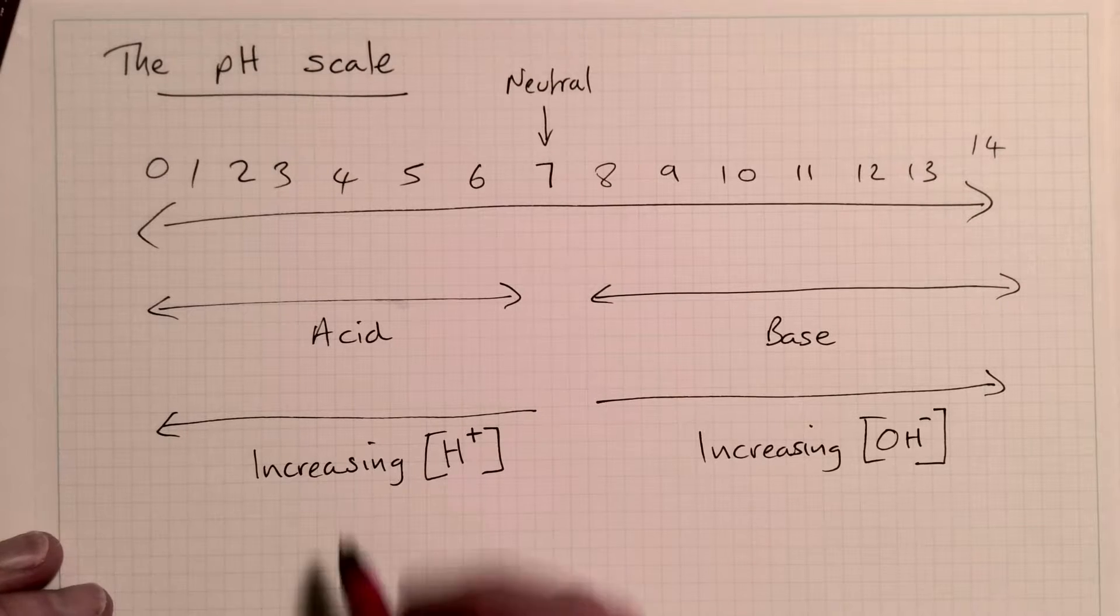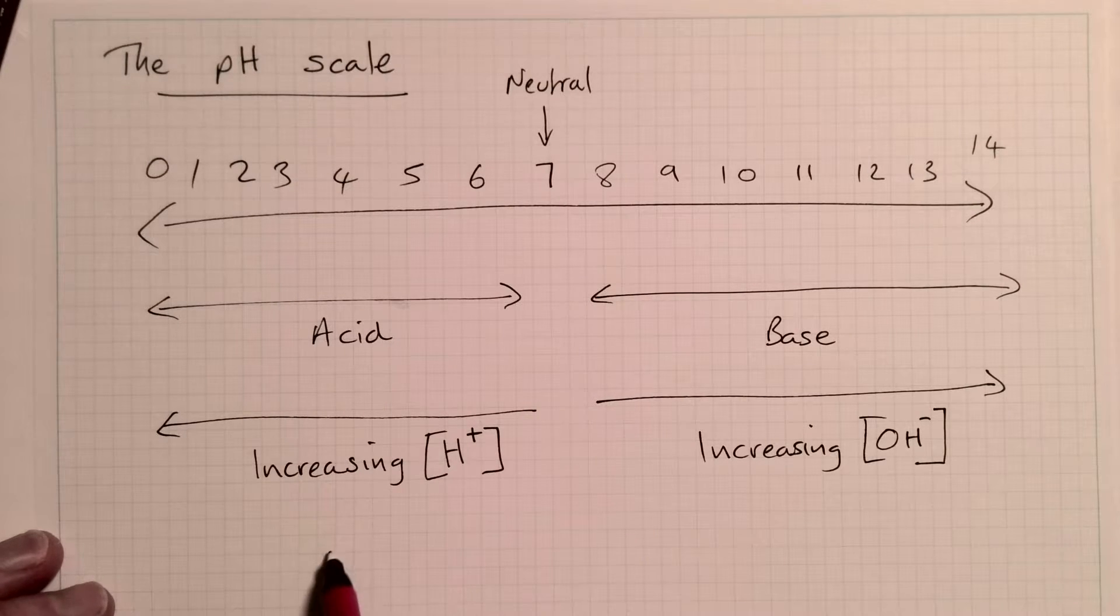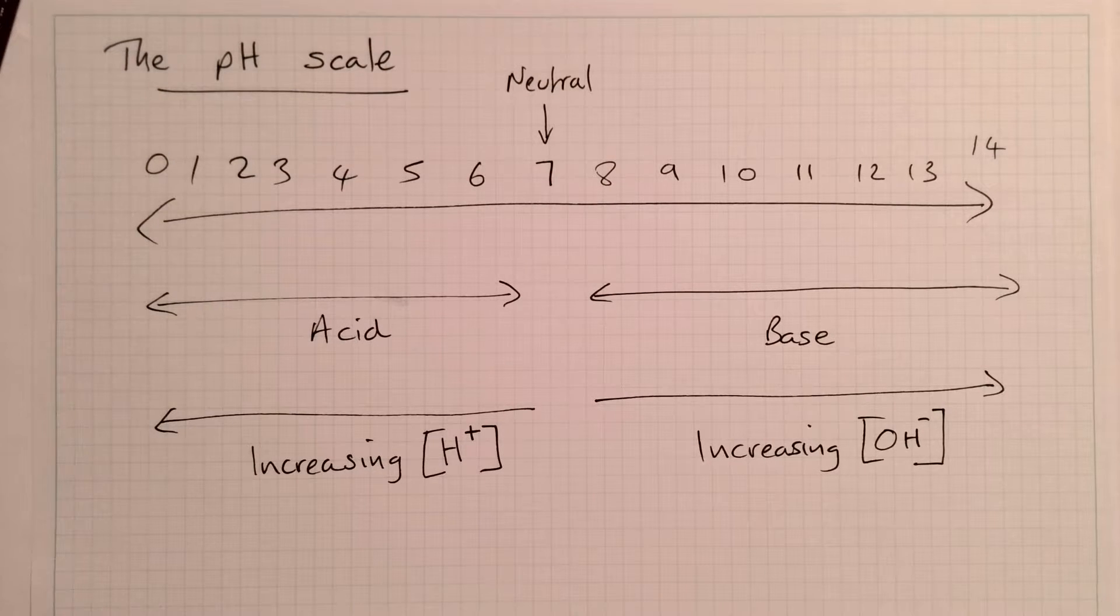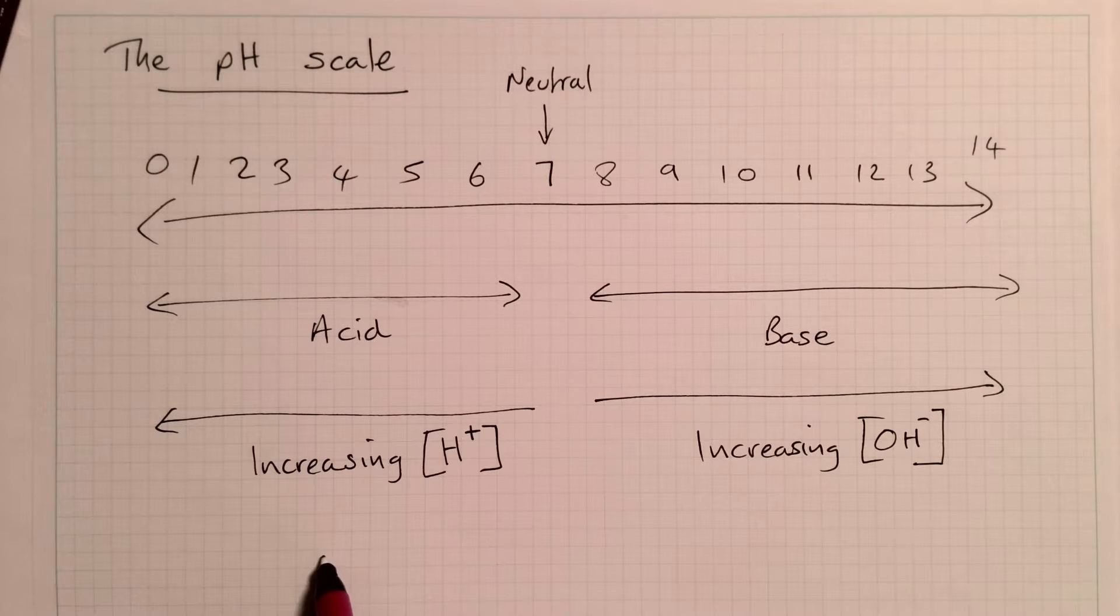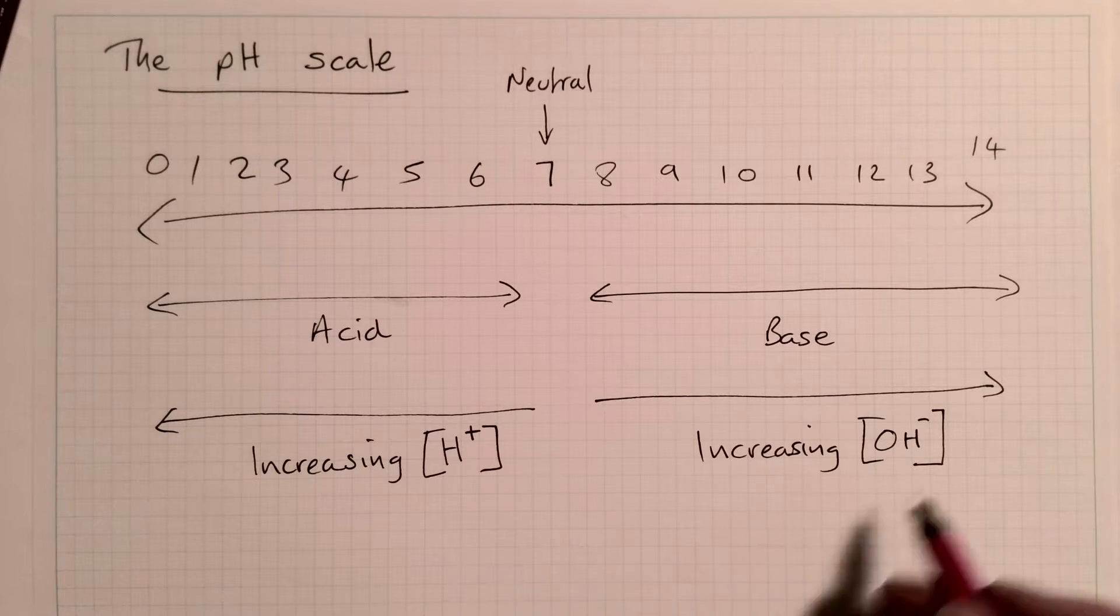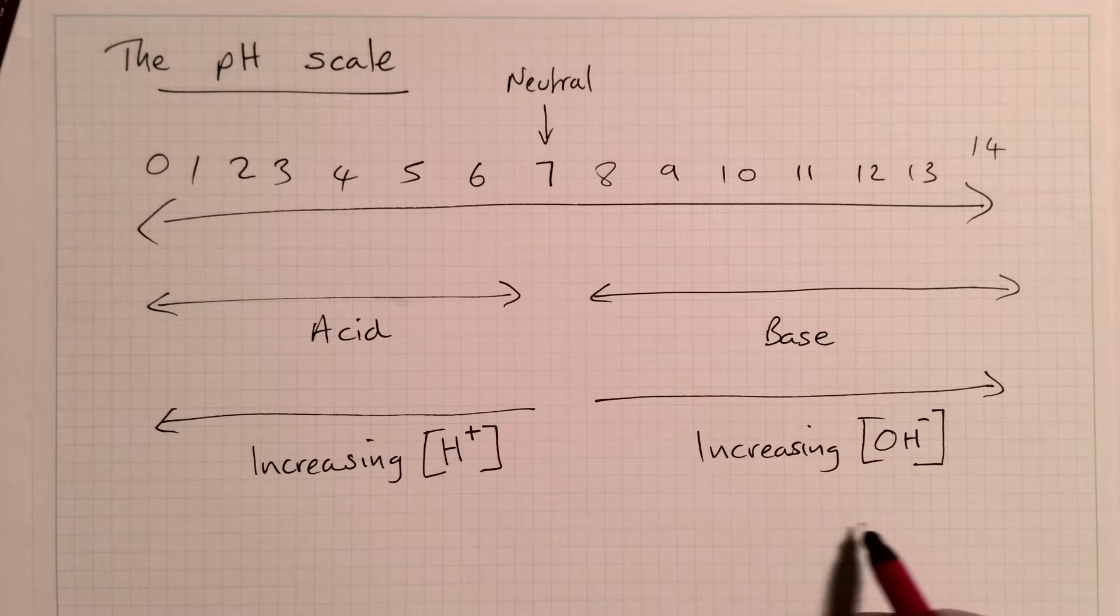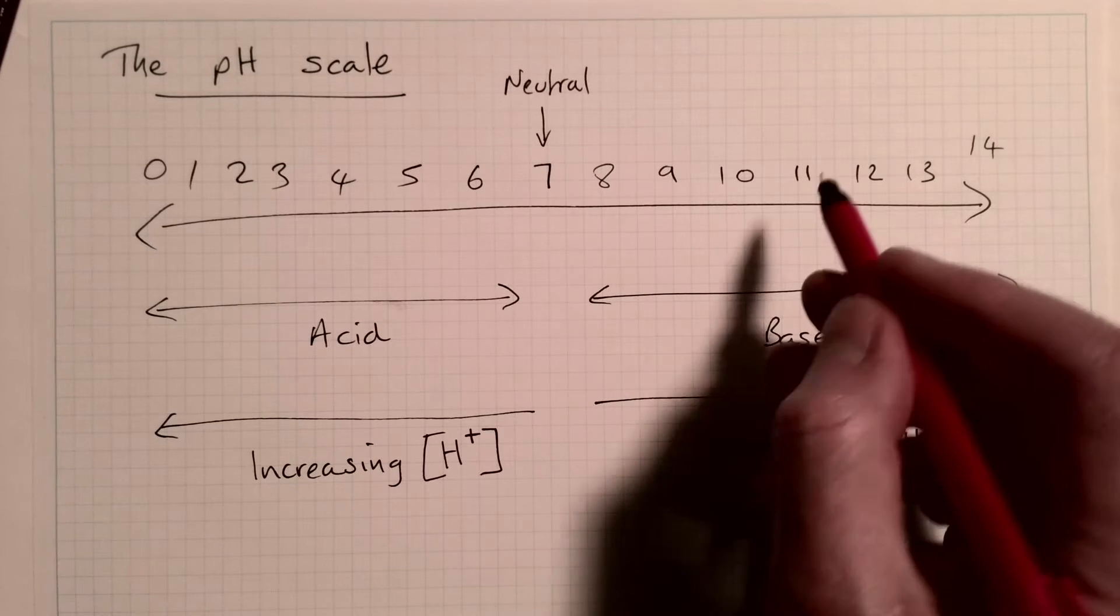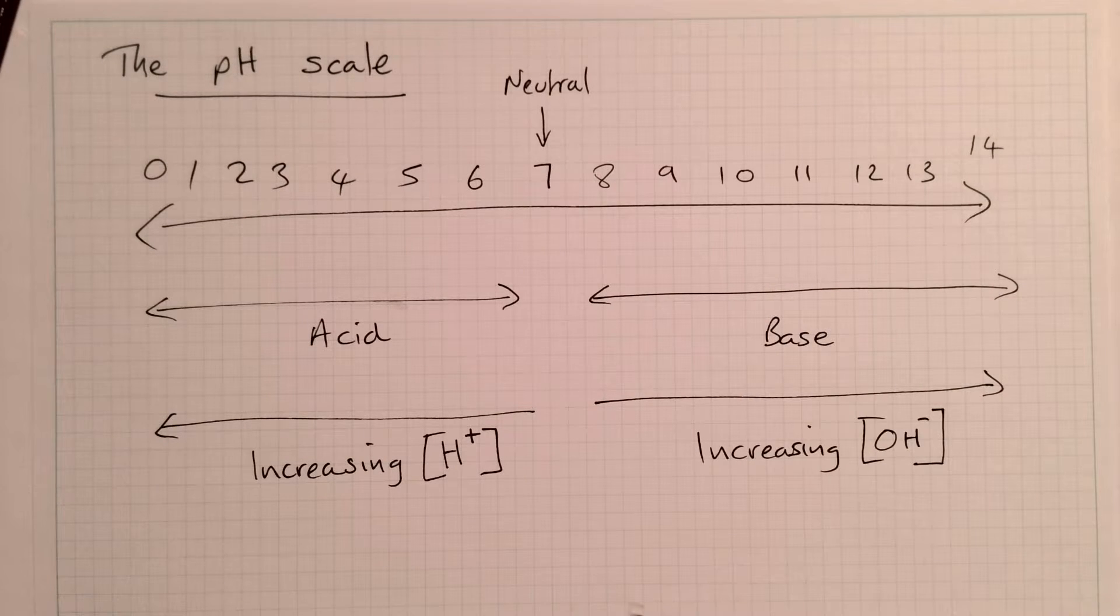So you might ask, if I've got something that's pH 4 over here, say an acid like ethanoic acid vinegar, and I add some sodium hydroxide to it, what's going to happen? Well, what happens is that it drags the pH back towards seven. And if I keep adding hydroxide ions, sodium hydroxide, I'll push it all the way out into the basic region of the pH scale.